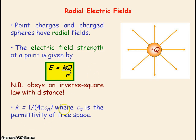K is a constant and it equals 1 divided by 4 pi epsilon_0, where epsilon_0 is the permittivity of free space, meaning empty space or vacuum.